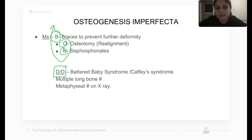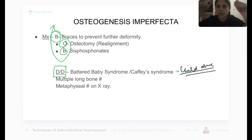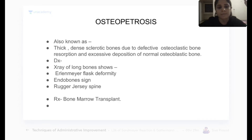The differential diagnosis for osteogenesis imperfecta is battered baby syndrome (Caffey syndrome), which is child abuse. Both conditions present with multiple fractures in different locations. Osteopetrosis is called marble bone disease — different from osteogenesis imperfecta.